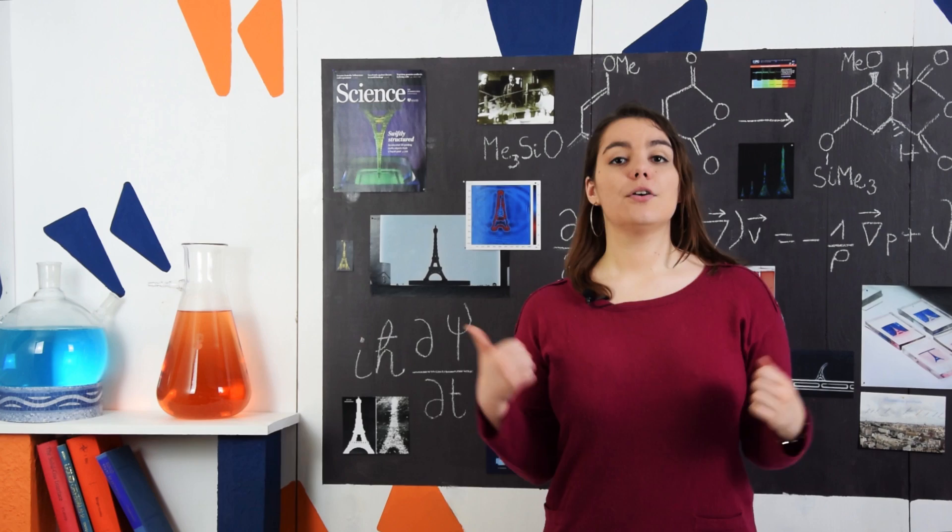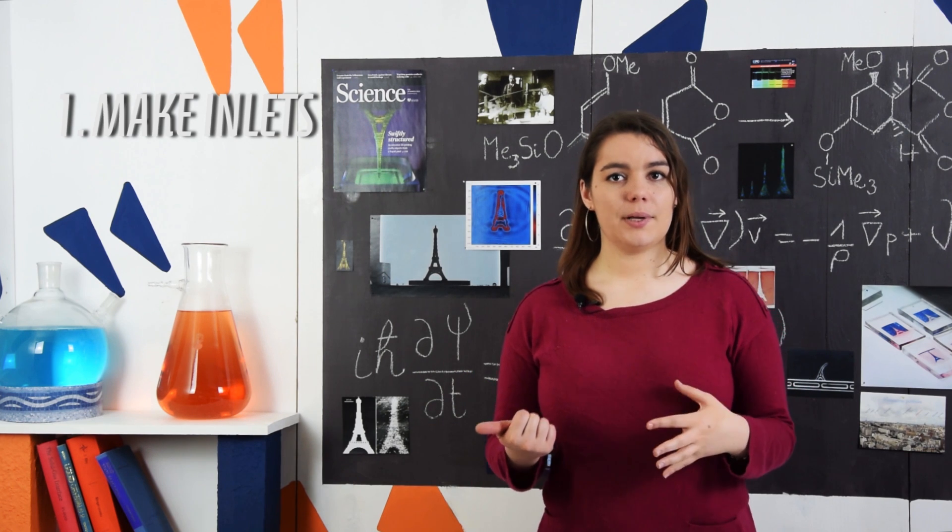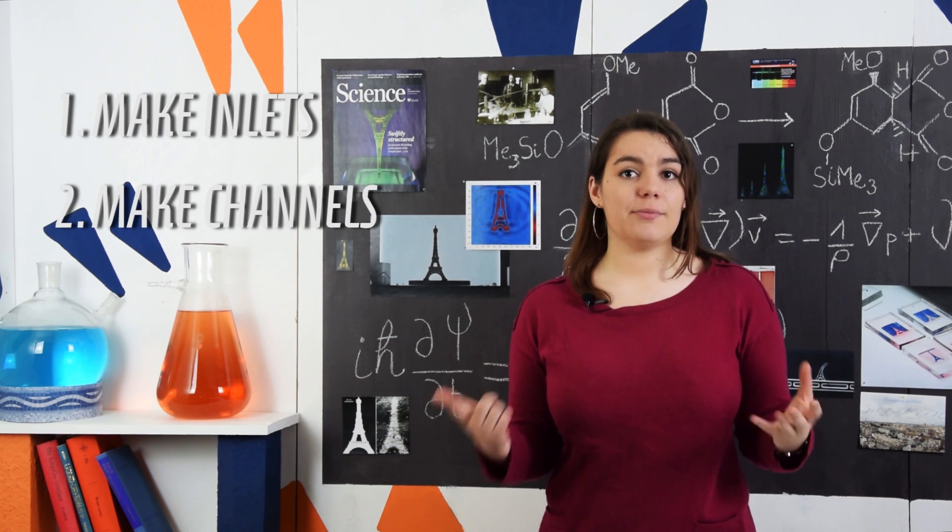So, what do we need? First of all, we need to make several different liquids enter the system. Then we need to build channels to make them circulate.